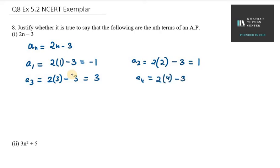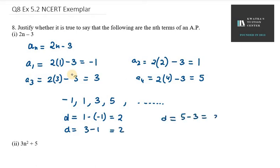So we get the first 4 terms: minus 1, 1, 3, and 5. Now we need to check whether it is forming an A.P. or not. Let's find the difference at different points. 1 minus minus 1 is 2. Next difference, 3 minus 1 is 2 again. Last one, 5 minus 3 is again 2. So yes, it is forming an A.P. The nth term is 2n minus 3.